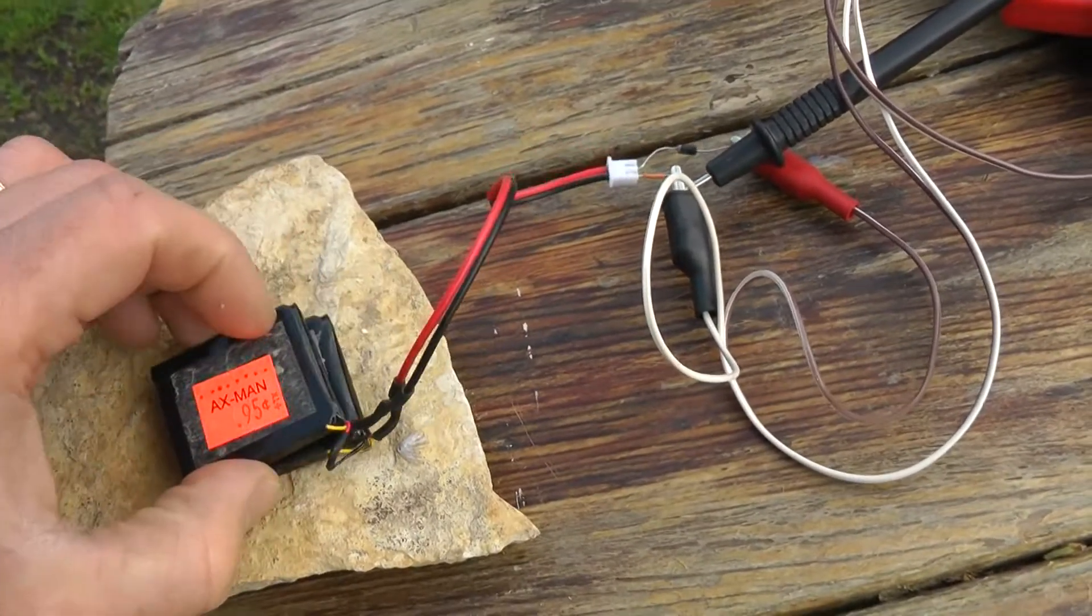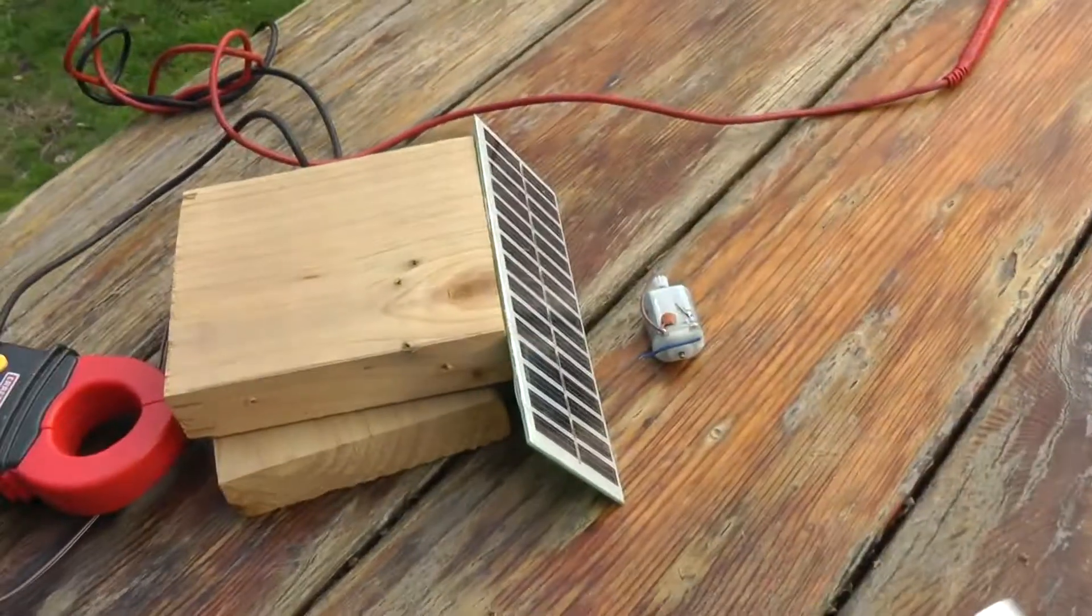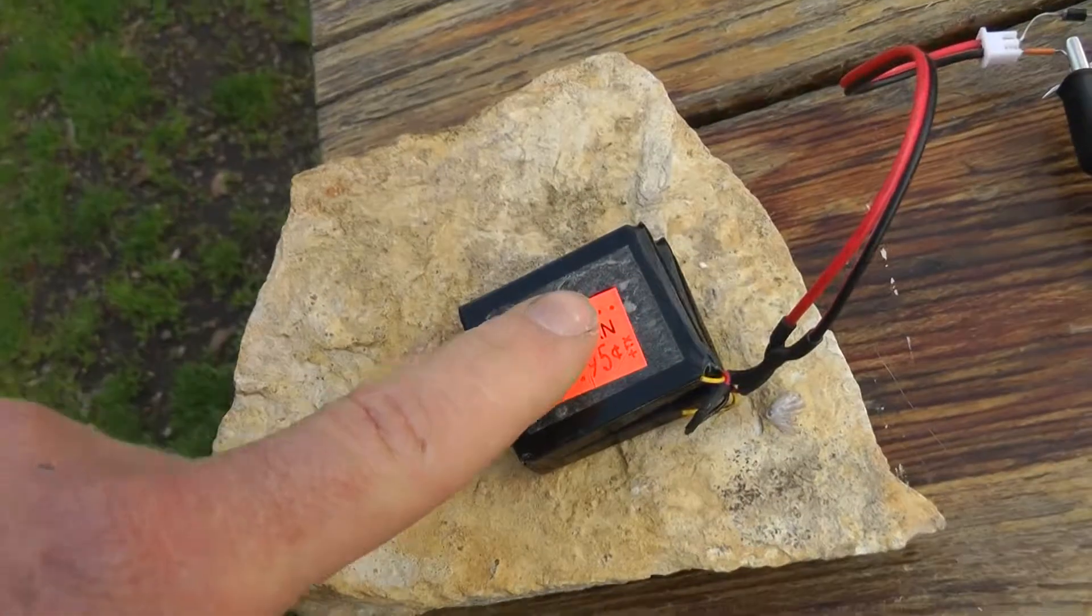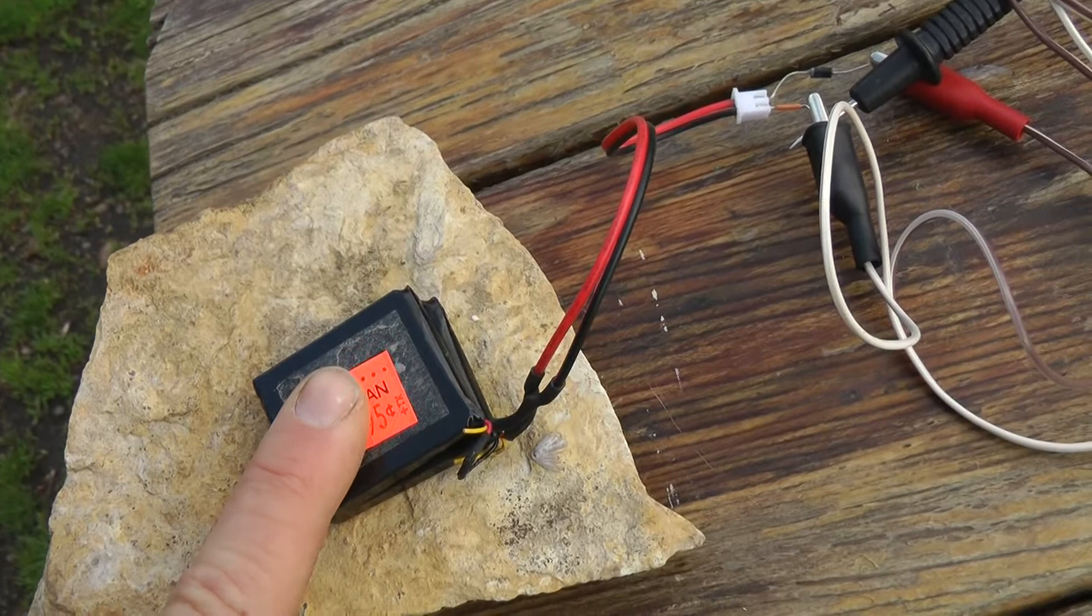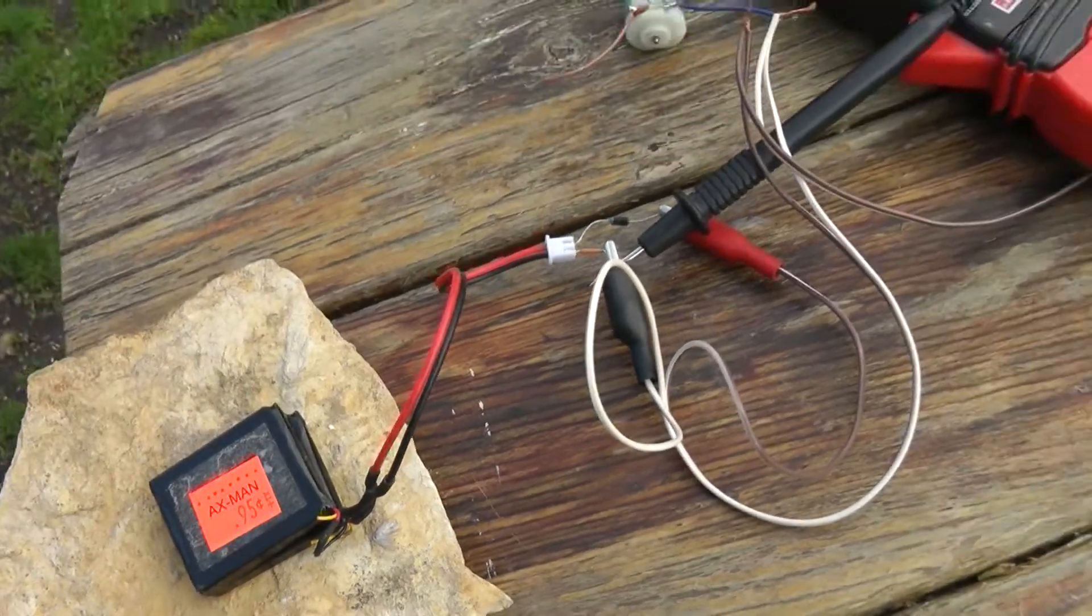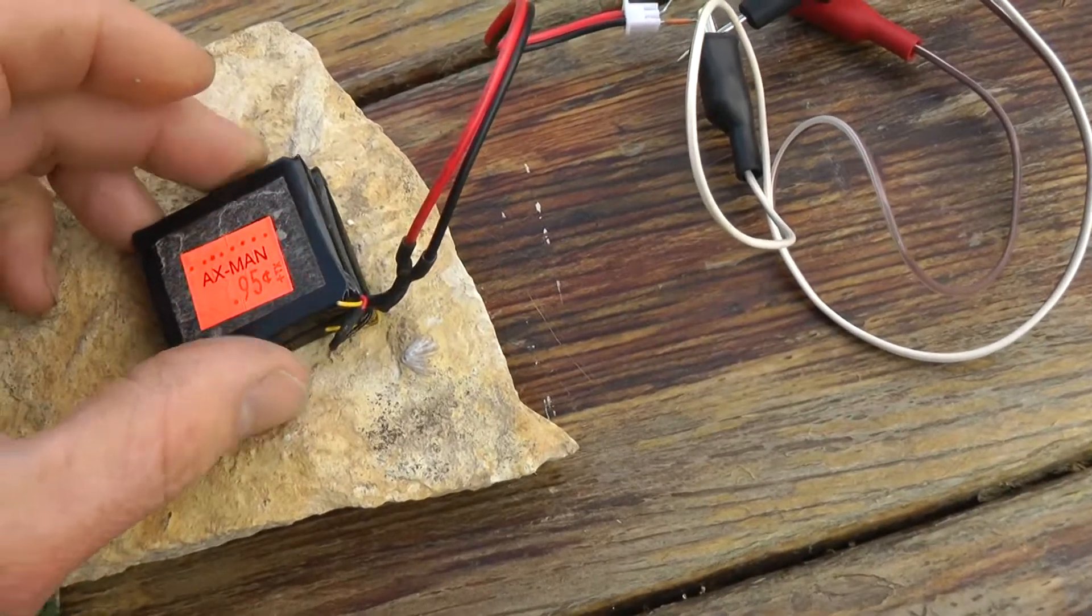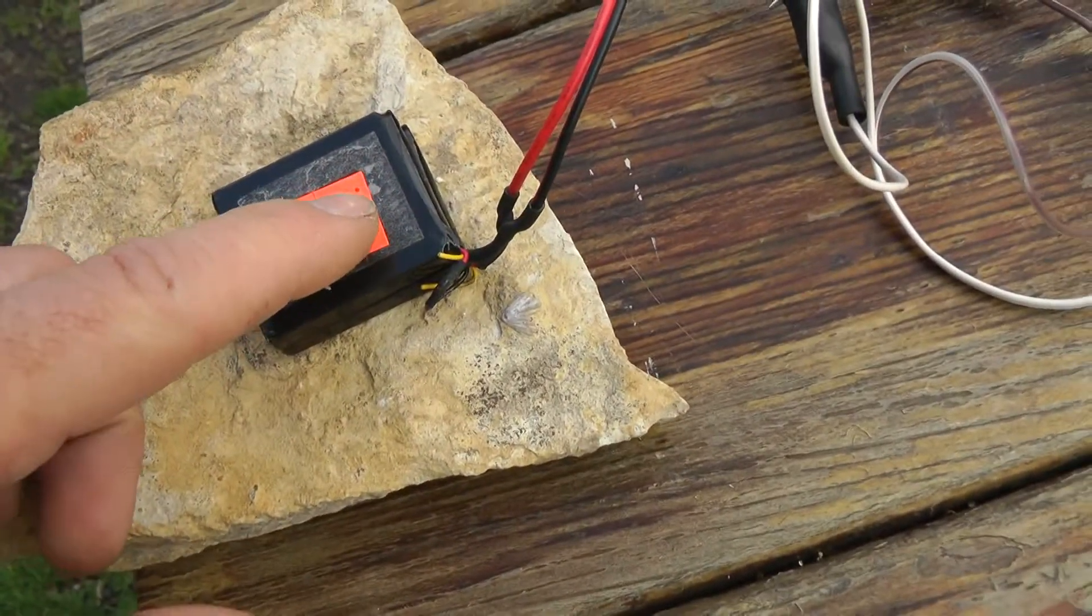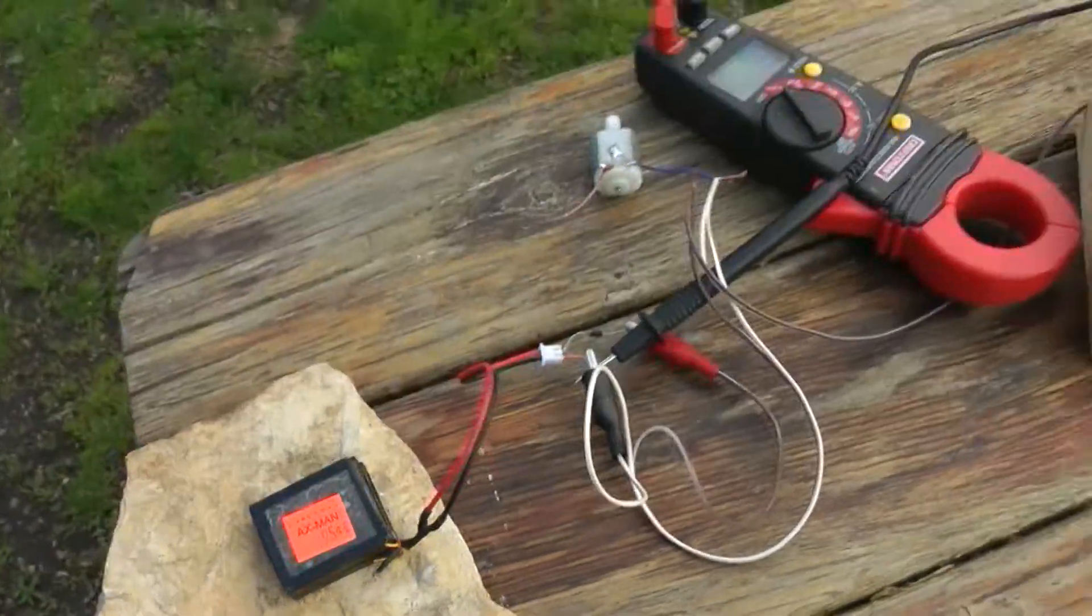I assume that as long as the voltage coming from the solar panel is higher than the voltage in the battery, it's going to go into the battery. And once they are equal, hit equilibrium, it'll stop charging it, and it's either that or they'll burst into flames. I don't know.